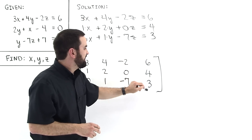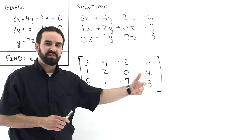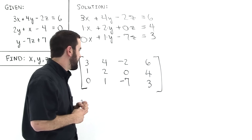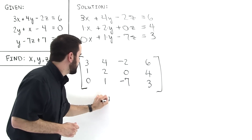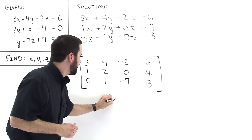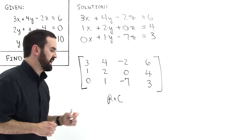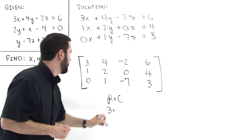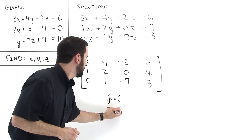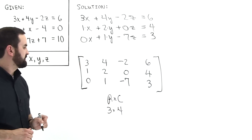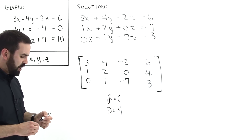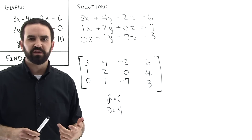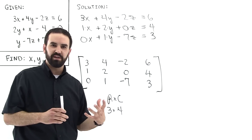This column of constants augments the coefficient matrix. In terms of rows by columns, we have 3 rows and 4 columns. Now we're going to use our calculator to solve this system — to solve this matrix.